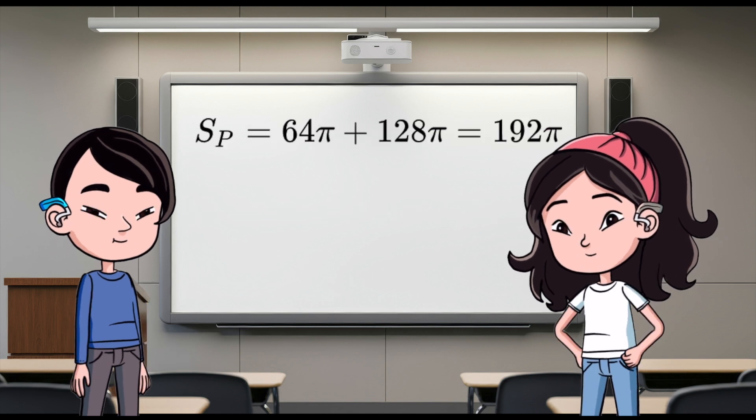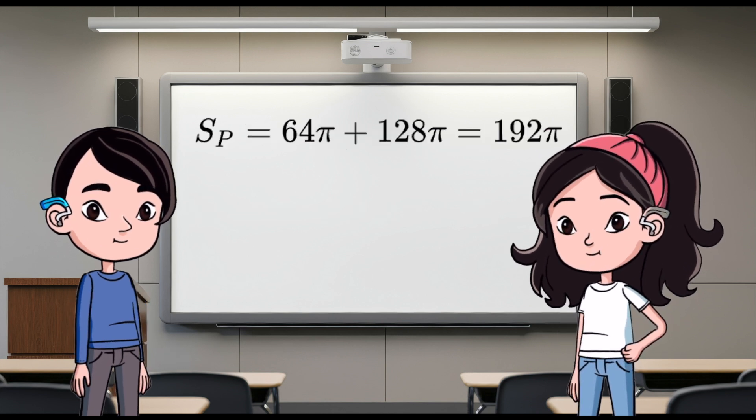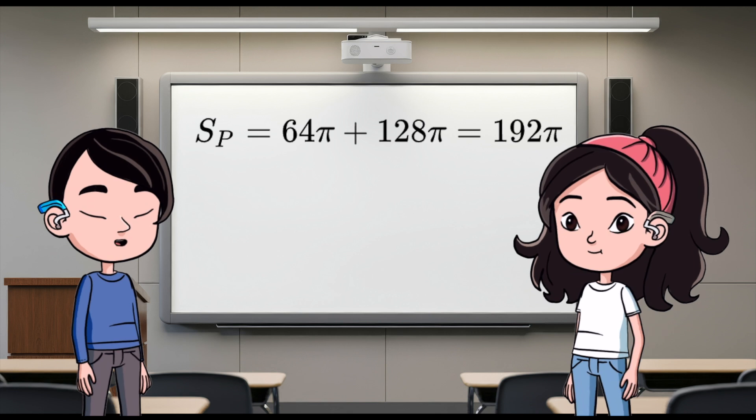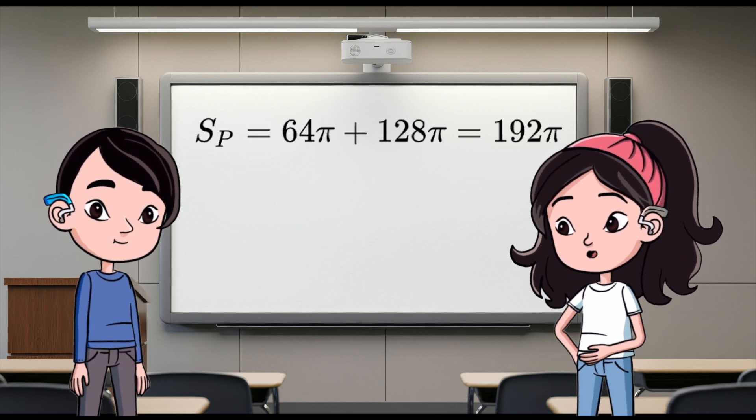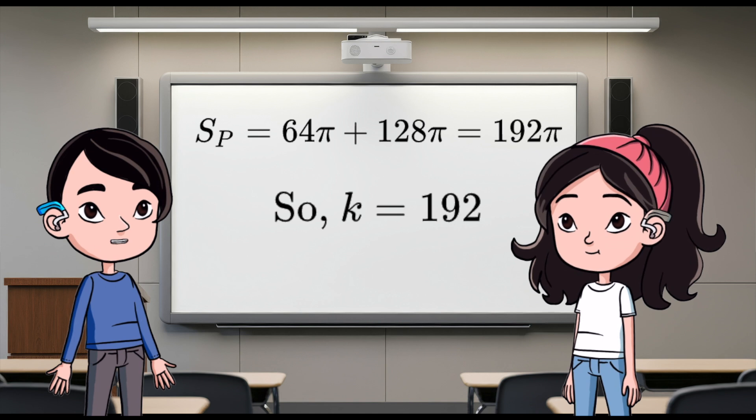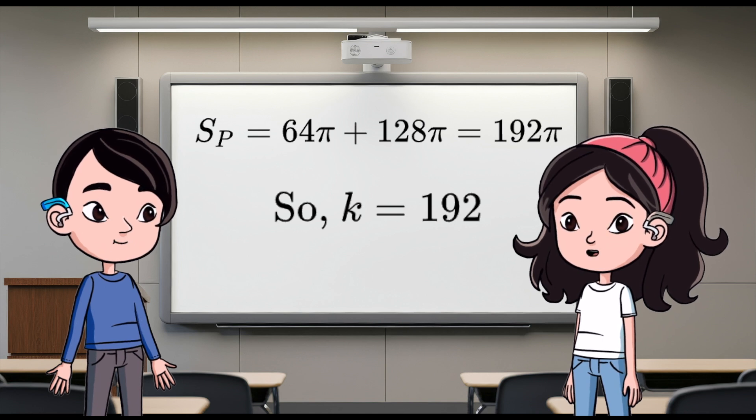Let's simplify. 2π times 32 plus 2π times 64. Which is 64π plus 128π. Totaling 192π. So, k equals 192. Alright, your turn, Taylor. Take it away.